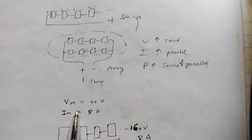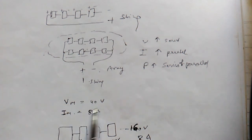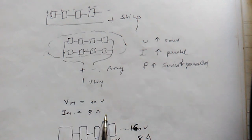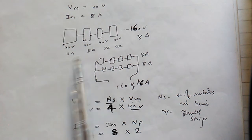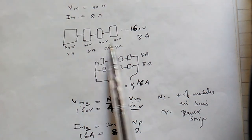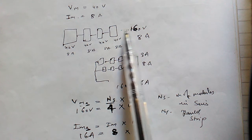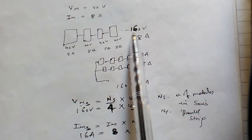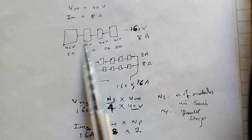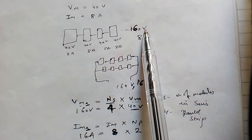The module parameters are: Vm (voltage at maximum power point) = 40 volts and Im (current at maximum power point) = 8 ampere, as mentioned on the module. If four modules are connected in series — 40V, 40V, 40V, 40V — the string output voltage is 160 volts because voltages add in series.